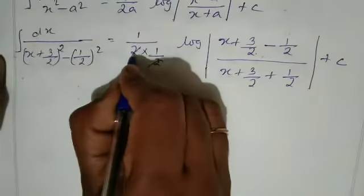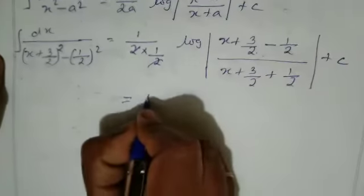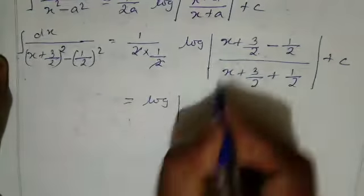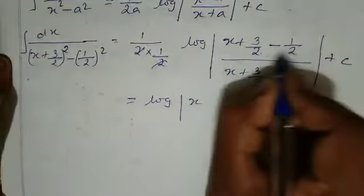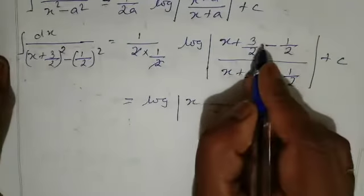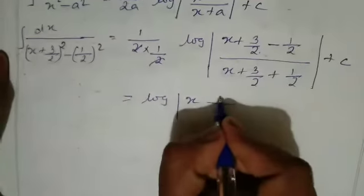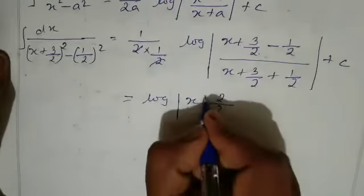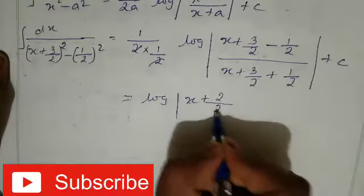So next line, 2 and 2 is getting cancelled. So finally log of x. Here we take LCM, denominator is same. So we can take 2, numerator 3 minus 1 is 2, so x plus 2 by 2.